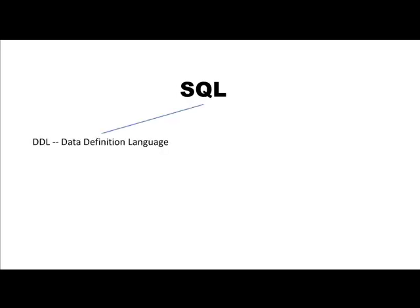Until now we have only looked at the part of SQL that retrieves information from the database. That is called Data Manipulation Language for SQL. But unless you can create tables and databases you cannot retrieve information, so obviously there is a part of the language that deals with those aspects. Broadly speaking, SQL has two components: one is called the Data Definition Language and the other is called the Data Manipulation Language. What we have looked at so far is one aspect of data manipulation — that is, given that the data exists, how do you retrieve information. But we have not looked at Data Definition Language: how in the first place do you create tables and databases?